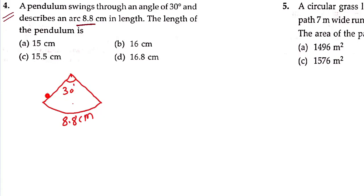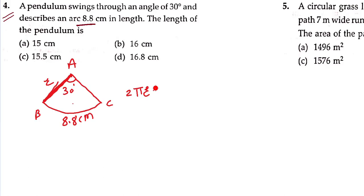So the length of pendulum is what's asked. Let's label it: A, B, C — and the length of this arc has to be found. If you can understand, this is a sector with a circle of radius. We have to find the length of arc. The formula for length of arc is (2πr × θ) / 360 degrees. This is the length of arc formula.